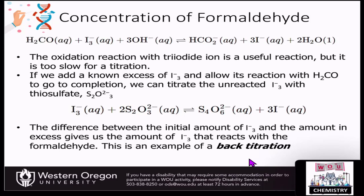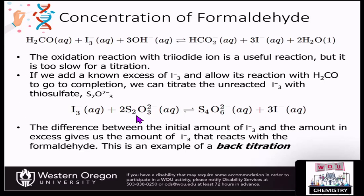This is an example of a back titration. The triiodide, which is yellow to brown in color, will turn colorless once it's converted to the iodide ion. We can calculate the amount of thiosulfate we put in, and we also know the total amount of triiodide we added to our solution. So if we subtract out the amount that reacted with the thiosulfate, the amount remaining is what must have reacted with our formaldehyde. This is known as a back titration.